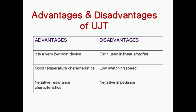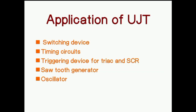The disadvantages are: UJT can't be used in a linear amplifier, it has low switching speed, and negative impedance. The applications of UJT include use as a switching device, in timing circuits, as a triggering device for triac and SCR, and as a sawtooth generator and oscillator.